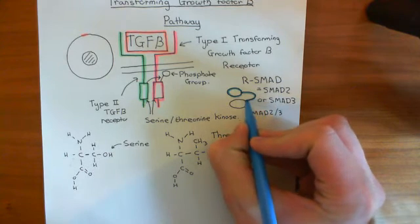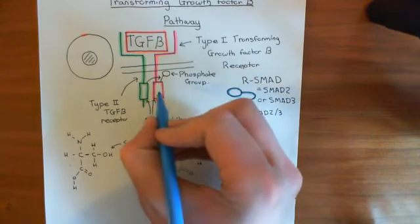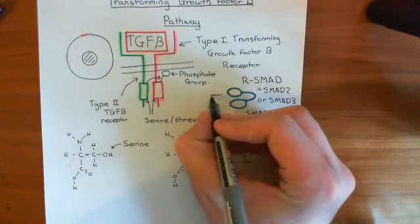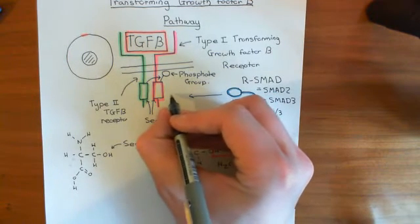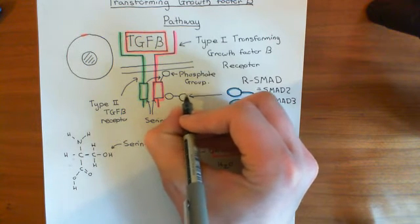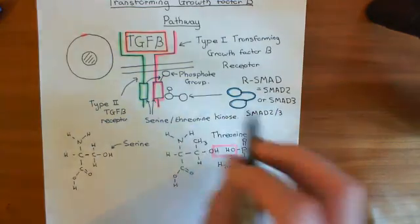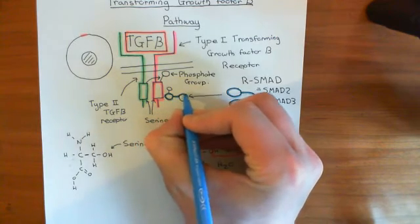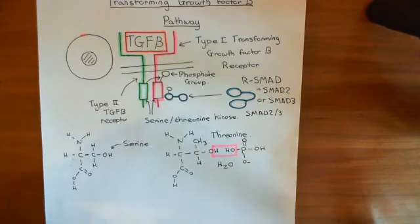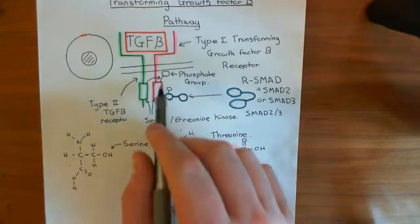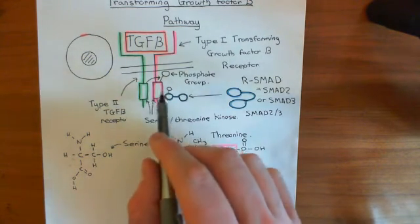So here comes SMAD2 or 3, and it's going to be phosphorylated by the active serine-threonine kinase of the type 1 transforming growth factor beta receptor. It comes over here and is phosphorylated by this serine-threonine kinase of the type 1 TGF beta receptor. When it is phosphorylated, it changes conformation — I've drawn it linearizing out rather than being bent over. Once it's got the phosphate group on it, it cleaves away from this serine-threonine kinase of the type 1 TGF beta receptor.